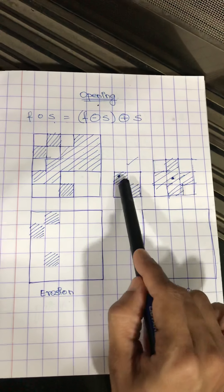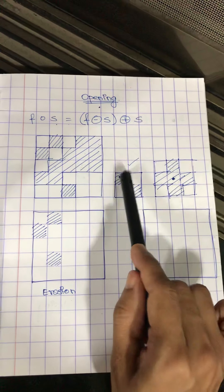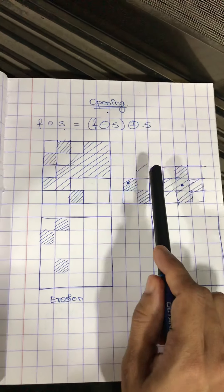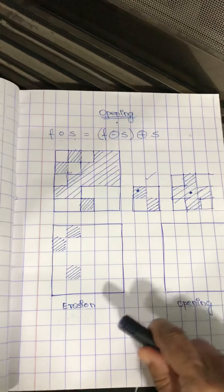Since it is a 2 x 2 structuring element, usually the origin will be indicated or you have to assume which is the origin. Usually it is the first pixel which is the origin of the structuring element.